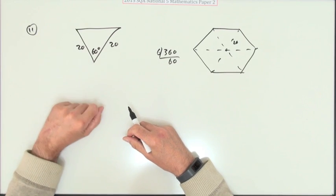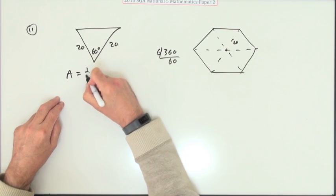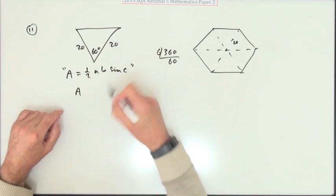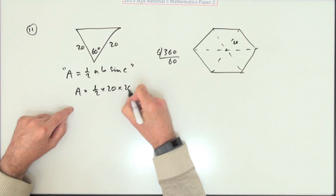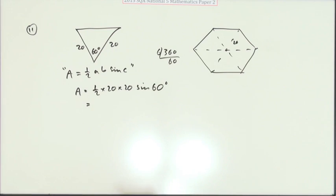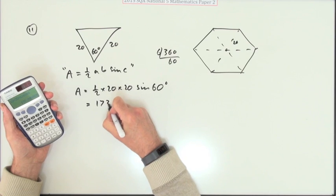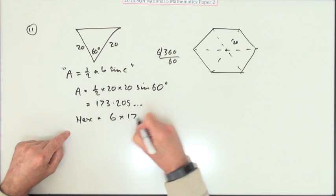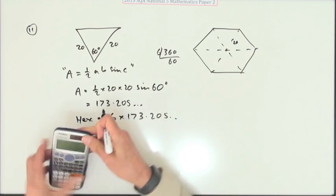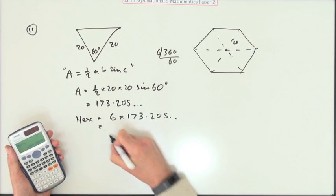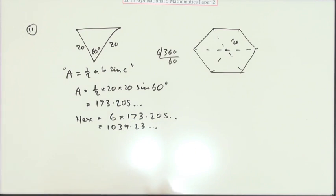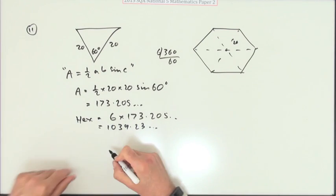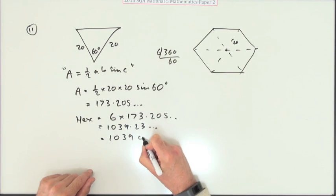You've got two choices for working at that area. You can either just use that formula: half a b sine c, which is probably the quickest one. So it's a half of 20 times 20 times the sine of 60 for one of those triangles. That's 173.205 and so on, which means the area of the hexagon will be six times 173.205, which gives 1039.23. It just says what's the area, so I'll just take it to a whole number: 1039 centimeters squared.